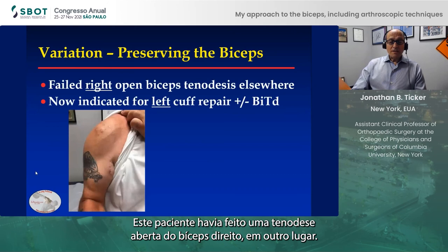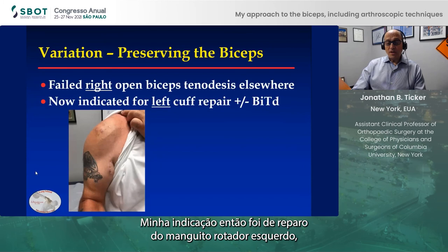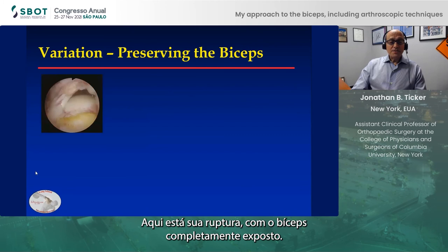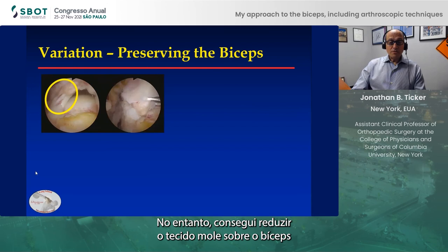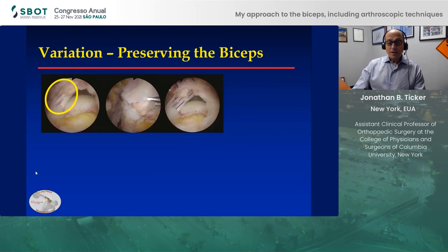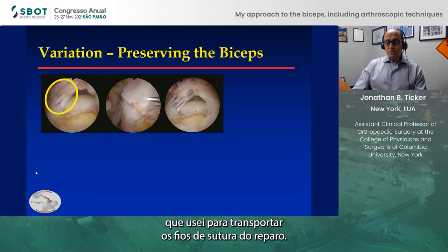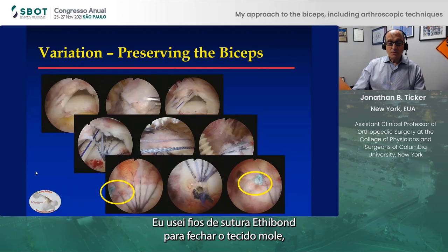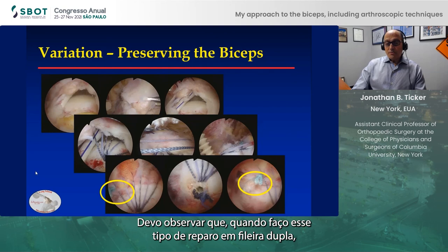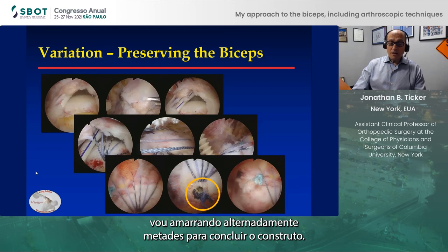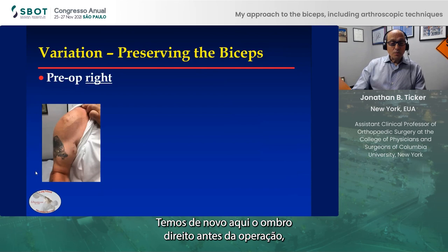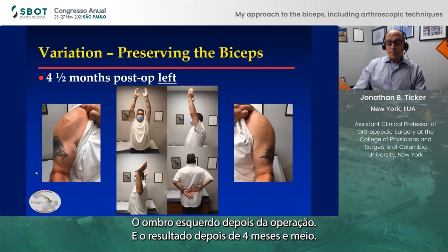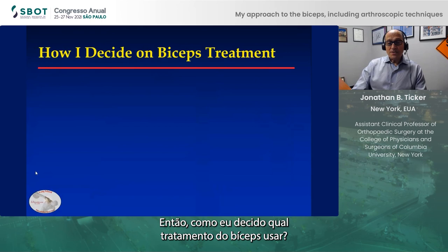In rare circumstances, you can preserve the biceps. This is a patient who had elsewhere a right open biceps tenodesis and wasn't satisfied with it. I now indicated him for a left cuff repair with the possibility of biceps surgery. Here's his tear with the biceps fully exposed. However, I was able to reduce the soft tissue over the biceps and fully reduce the cuff tear. I placed two monofilament sutures to shuttle repair sutures, proceeded with my steps for the double row repair, and here's the completed repair. I use Ethibond sutures to close the soft tissue and cover the roof of the biceps and preserve it. When doing this double row repair, if the anchor does not allow for internal locking, I'll tie alternating half hitches to complete the construct. The right shoulder preoperatively he wasn't happy with; the left shoulder postoperatively showed his outcome at four and a half months.